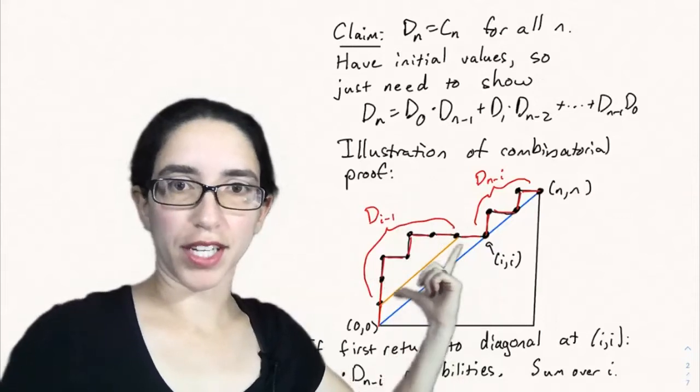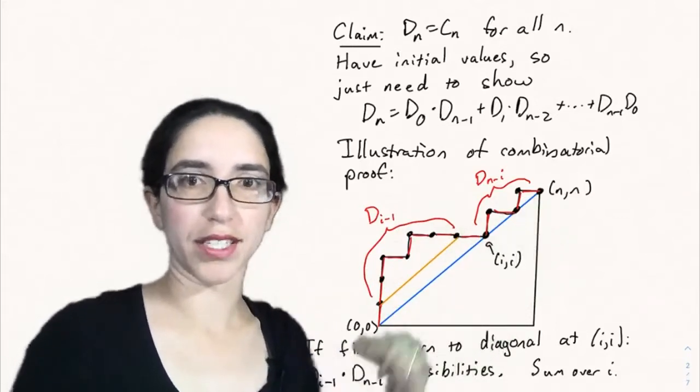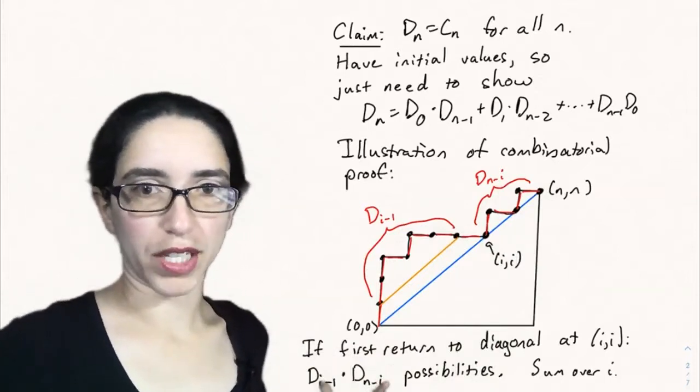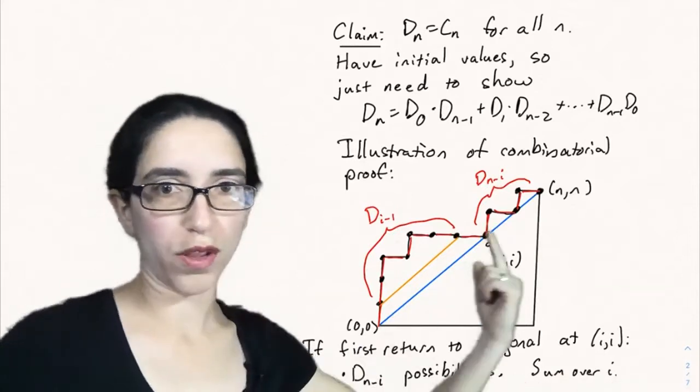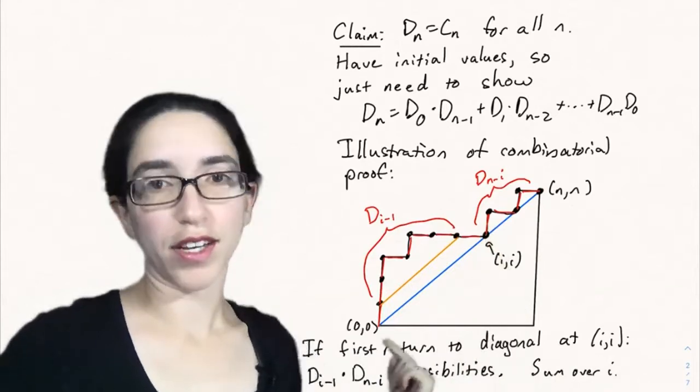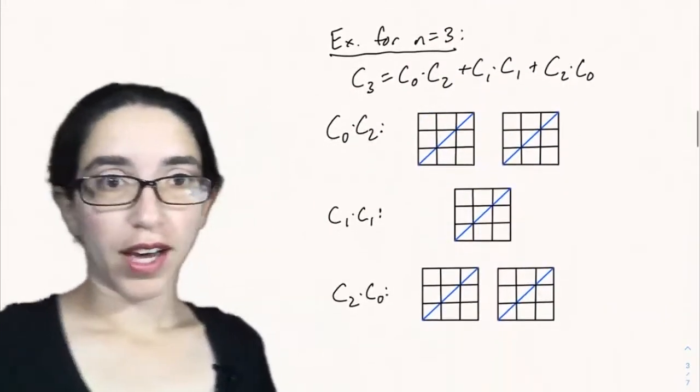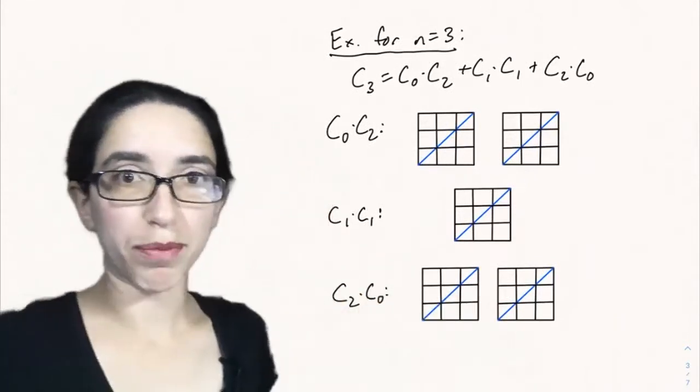So there's D sub n minus i choices here, and then D i minus 1 and D sub n minus i here. You multiply those together to get the product number of possibilities. And then finally, we sum these possibilities over all the possibilities of what i is, what height you first return to the diagonal at, even if that possibility is n. That gives you that recursion, and so we know the Catalan numbers count the number of Dyck paths.